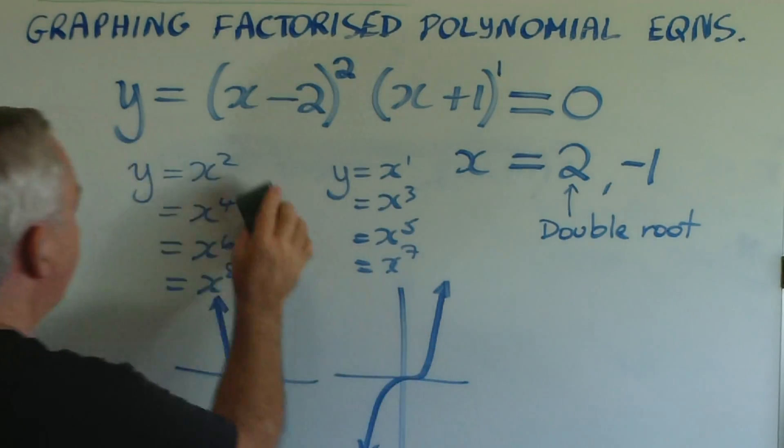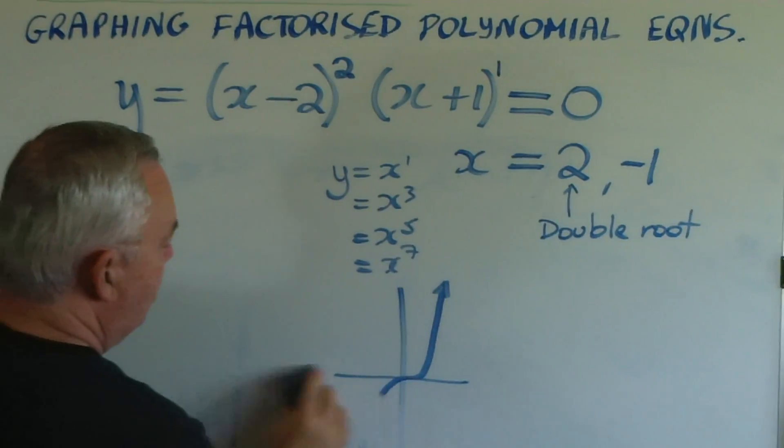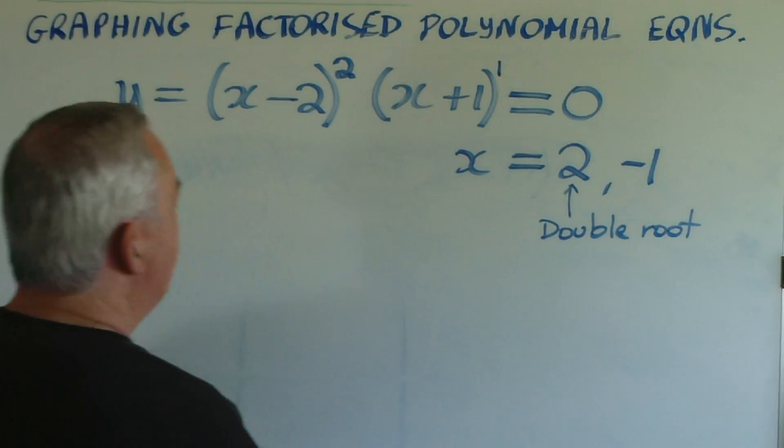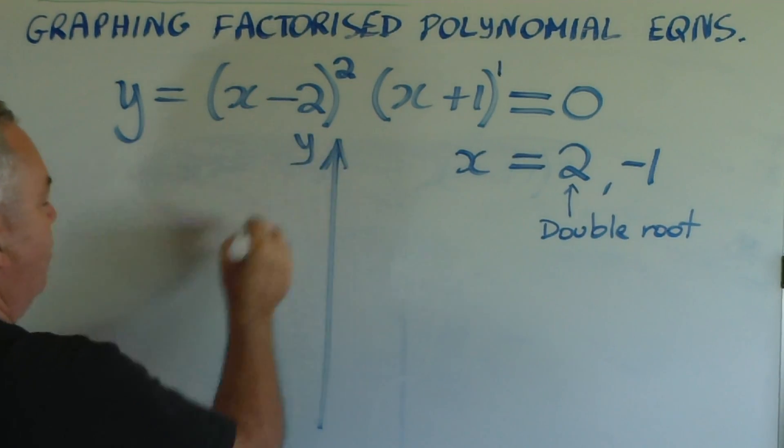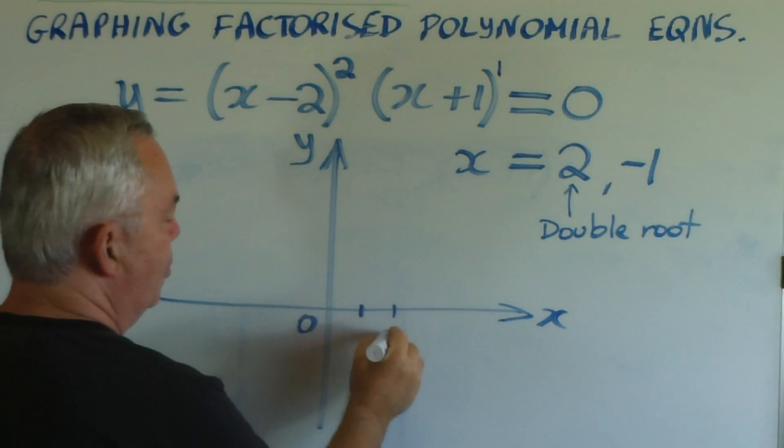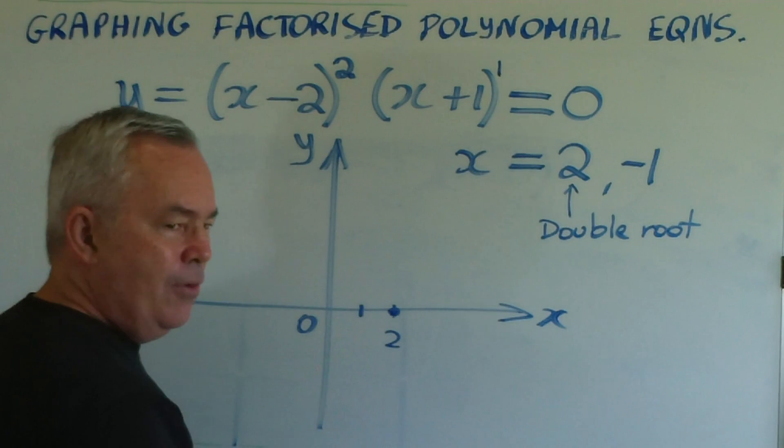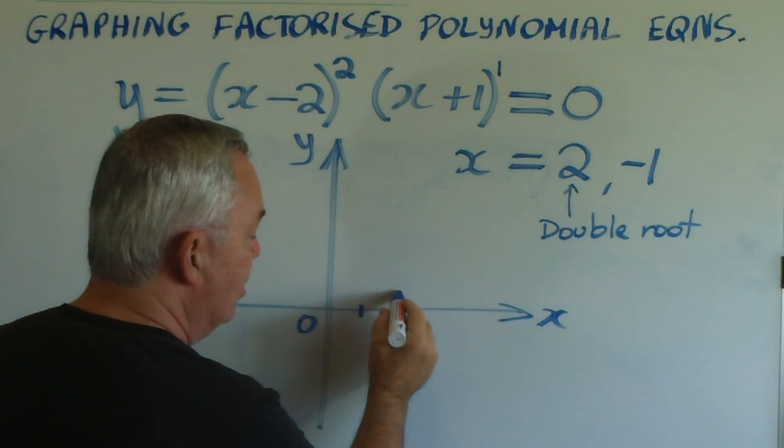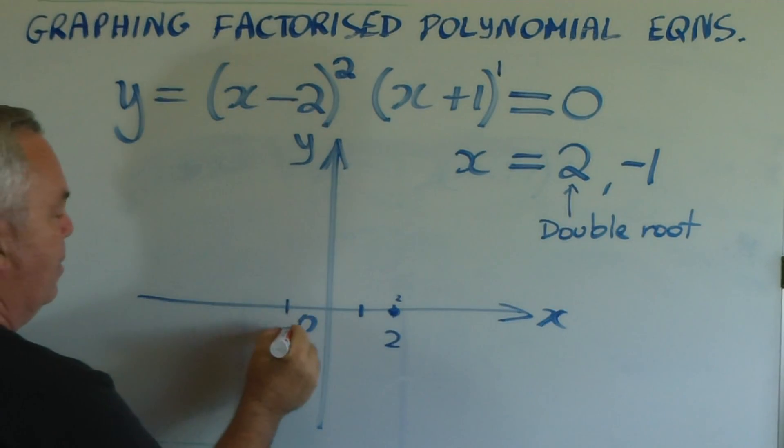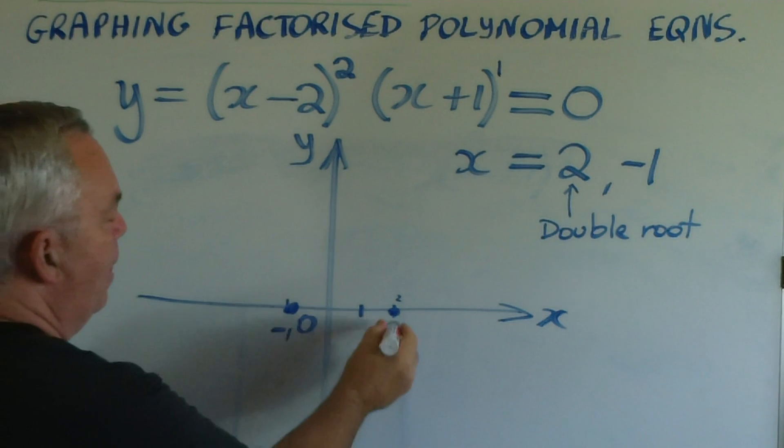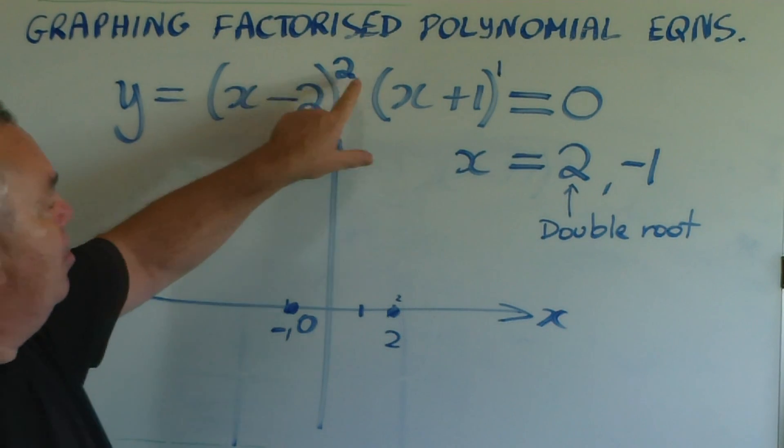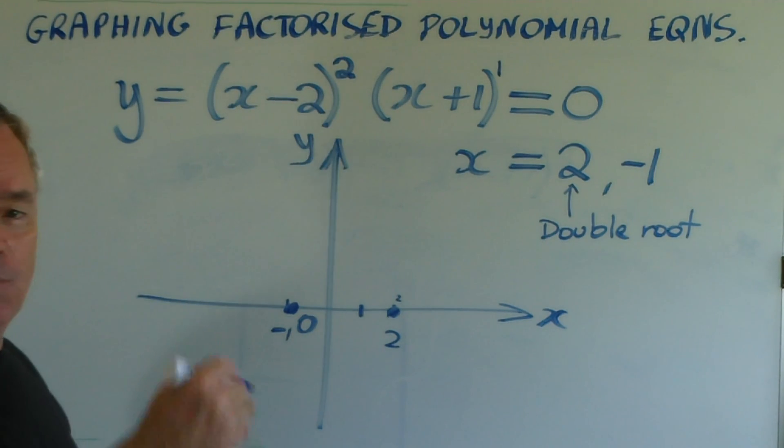And if I was to graph it—I'll just show you this very quickly—I would still draw my axes, identify the two roots—one, two. If you're doing this in pencil, it's sometimes nice to just write a little two there to remind you that it's a double root. There's another root at minus one. And my graph goes through those two points, even though it's a cubic. I have an x cubed times x, and I expect it to be an S shape.